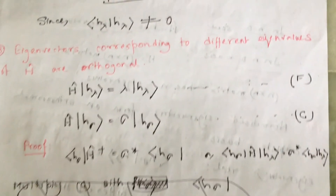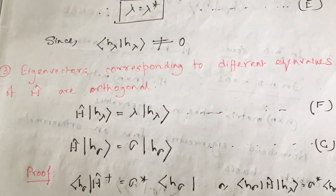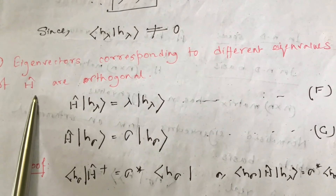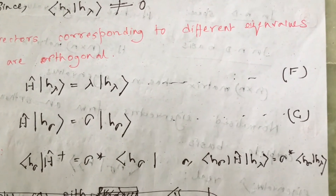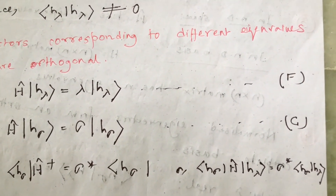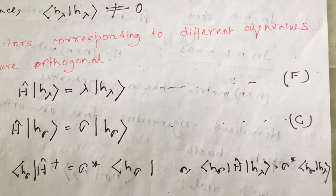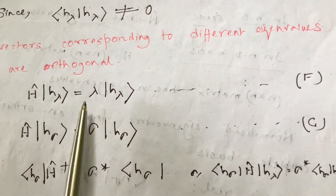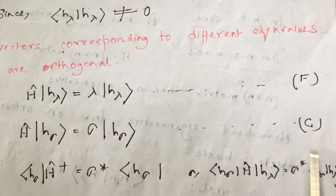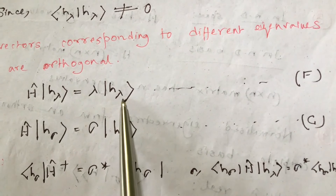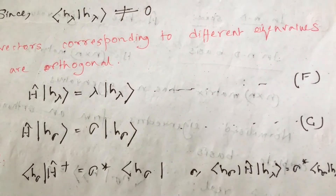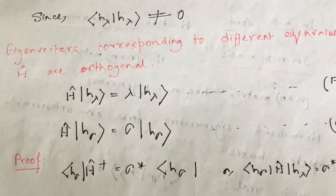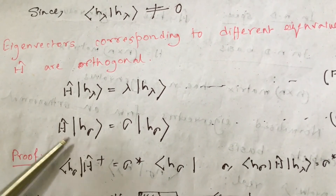Now let's prove that eigenvectors corresponding to different eigenvalues are orthogonal. These are eigenvectors of the Hermitian operator H corresponding to different eigenvalues. We have two eigenvectors |H_λ⟩ and |H_σ⟩ corresponding to different eigenvalues λ and σ, giving equations F and G respectively. We start by taking the Hermitian conjugate of equation G.